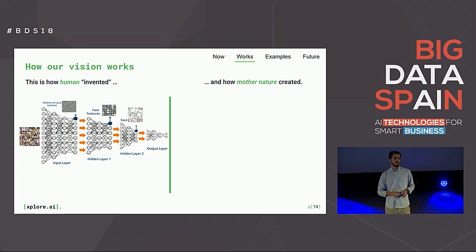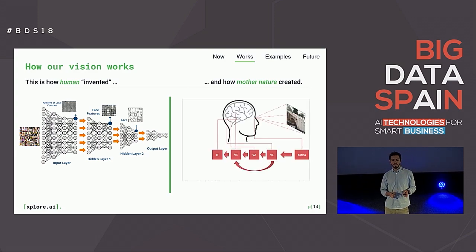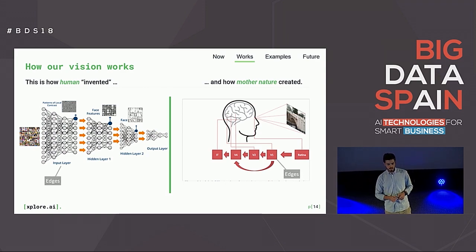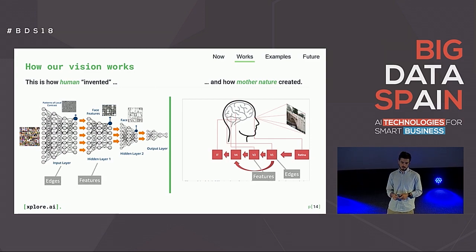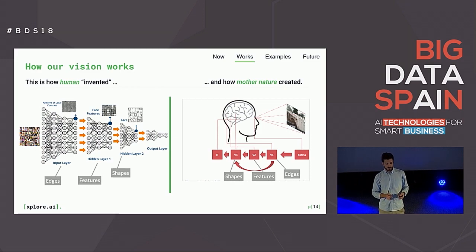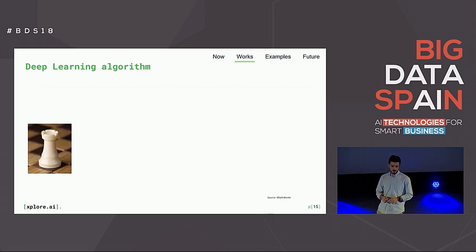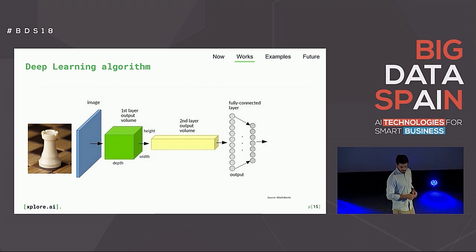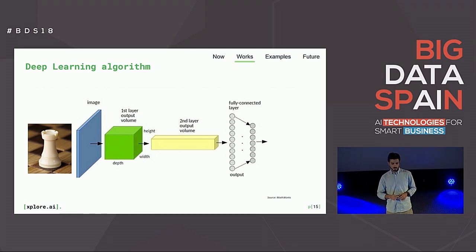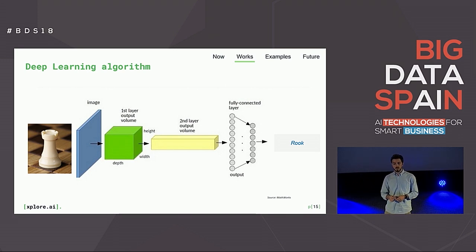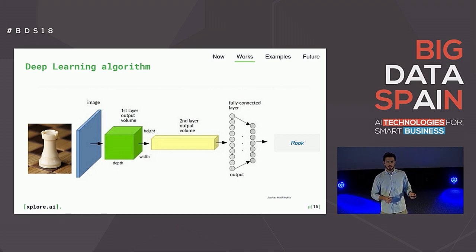There are a lot of similarities between how the brain processes vision and what you're seeing in a convolutional neural network. The first part is the same — it's about edges. The second part of the CNN tries to detect features, then shapes, then recognition — the part that tells the user what they're seeing. In the neural network, we start with an image as a huge array of pixel numbers, recognize simple edges and shapes, then higher-level features and abstraction, and in the very end the neural network says 'this is a rook' because it has seen many rooks of similar shape.